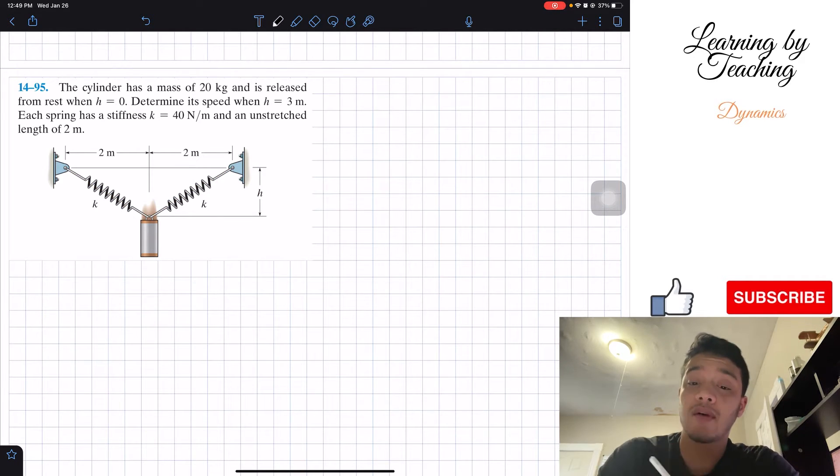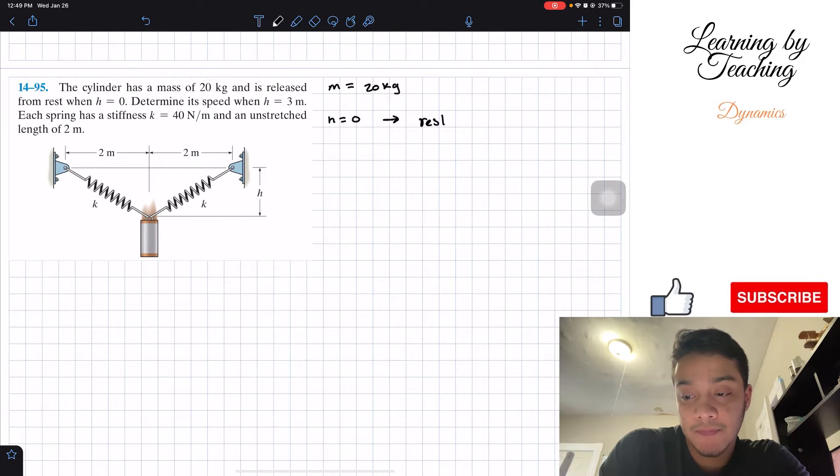The first thing I like to do in these problems, like always, is write out my givens. We're given that the mass is equal to 20 kilograms. We're being told that when h equals zero, our cylinder is at rest. We're also being told that we want to know the speed when h equals three meters.